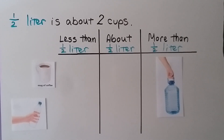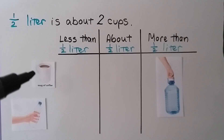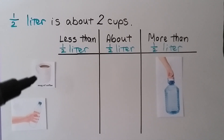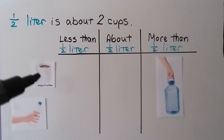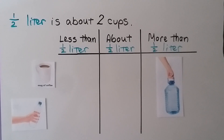Here we have a mug of coffee. Do you think this mug of coffee is less than a half liter or about a half liter? Remember, a half liter is about two cups. This mug of coffee is pretty much one cup — a little bit more. So I would say it's less than half liter.